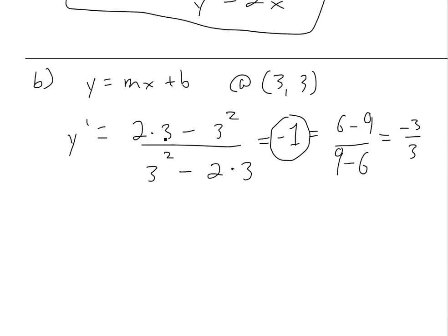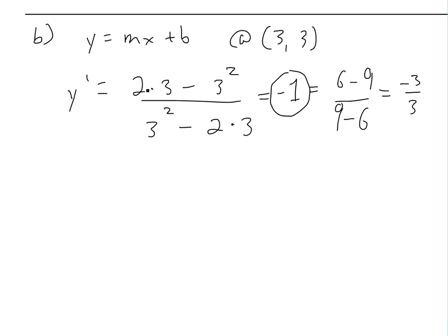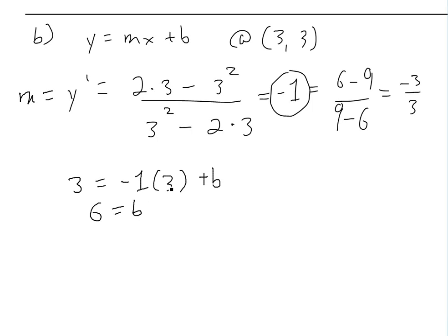So if you're doing the exact same thing but with different signs, it's just going to be negative 1 when dividing. So that's our m. We just need to solve for b, so we plug in y=3, m=negative 1, x=3: 3 equals negative 1 times 3 plus b, so 3 equals negative 3 plus b, which gives us b equals 6. So 3 plus 3 equals 6. And then we get the equation y equals negative x plus 6, so this is our tangent line.